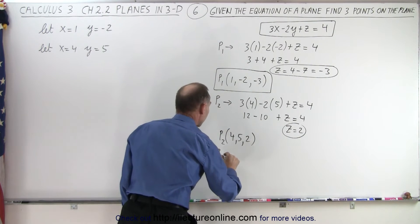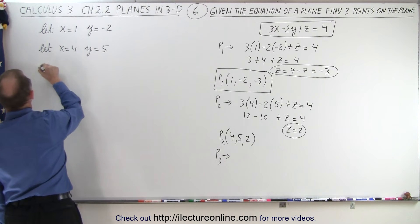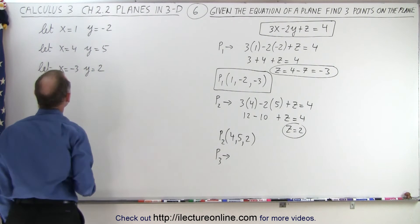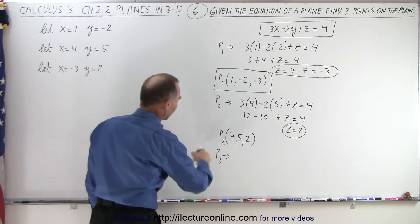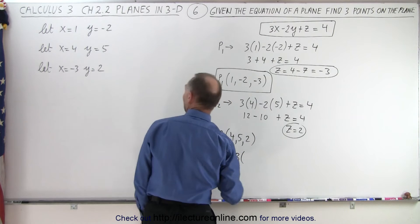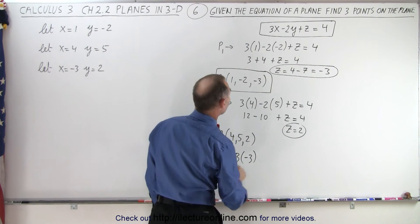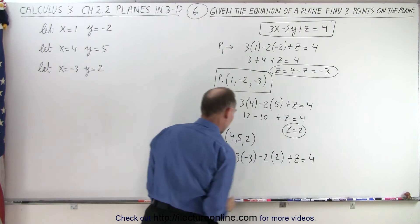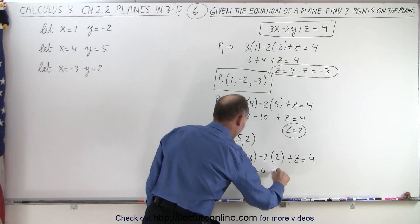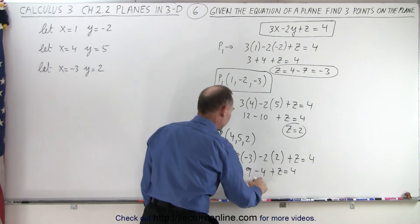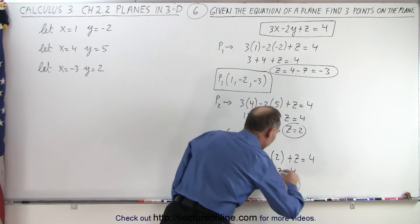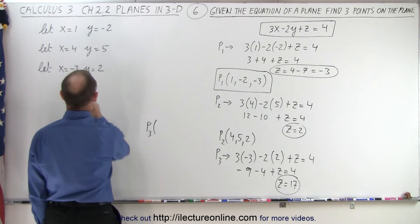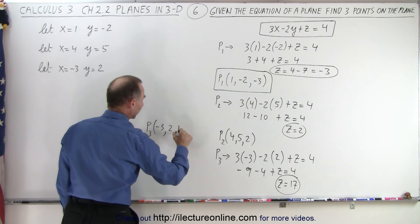Now for point 3, let x equals negative 3 and y equals positive 2. Plugging those in, we have 3 times negative 3, minus 2 times positive 2, plus z equals 4, which gives negative 9 minus 4 plus z equals 4. So z equals 4 plus 13, which means z equals 17. Point 3 has coordinates negative 3, 2, and 17.